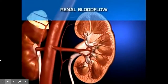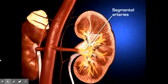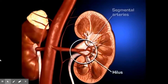Each kidney is supplied with blood by a single renal artery that arises on its respective side of the aorta, before dividing into five segmental arteries that enter the hilus. Within the kidney, each segmental artery branches into several lobular arteries.